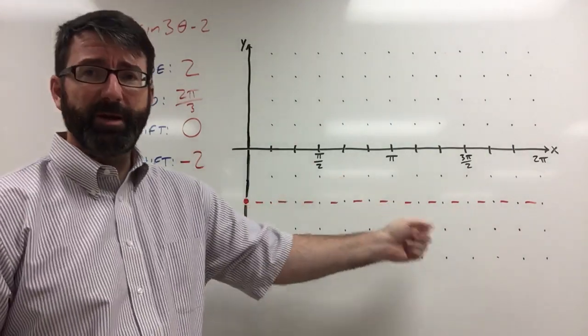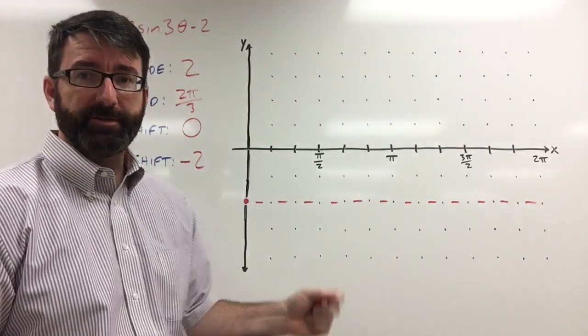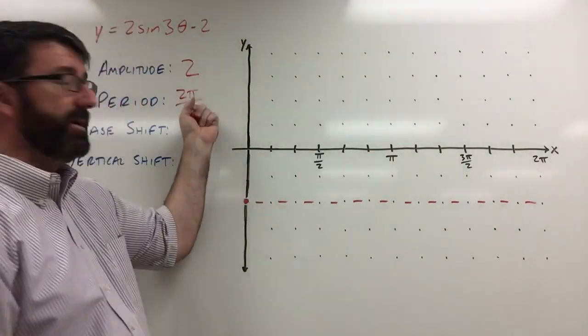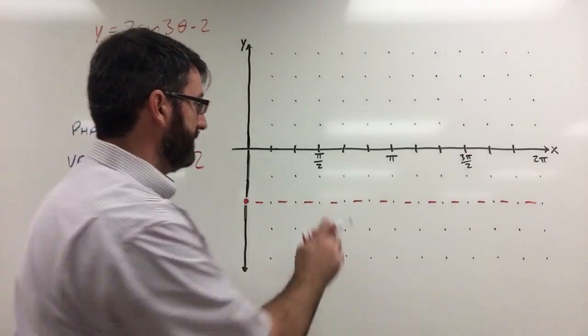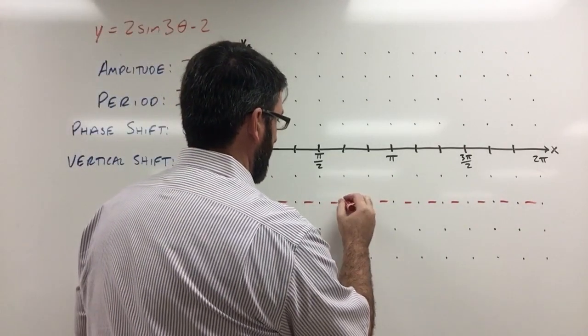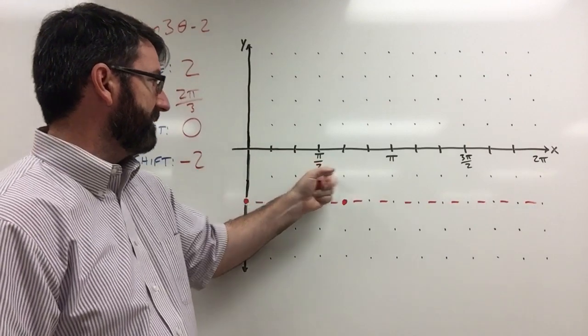And now after one period, we're always going to be back to where we started. So after one period, the period is 2 pi over 3. So if we go out 2 pi over 3, we're going to be back at that midline. And you can see this is pi over 2, this is pi.